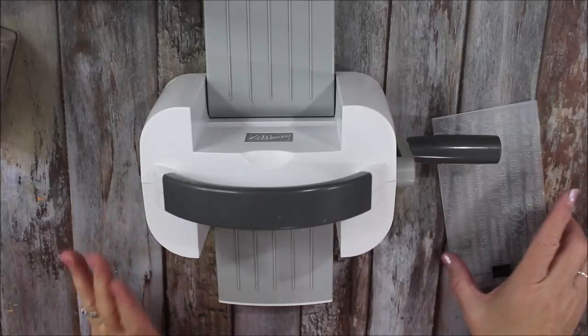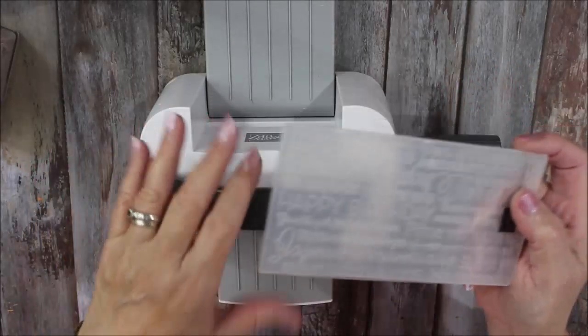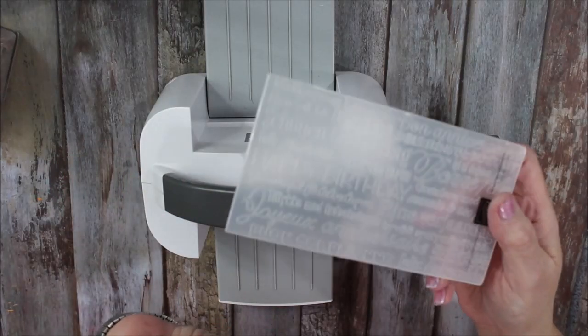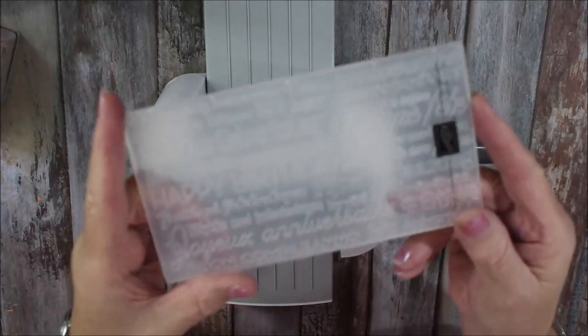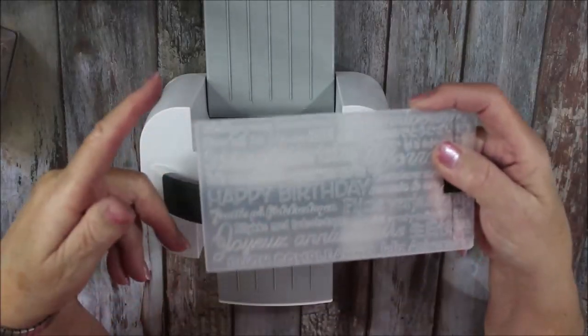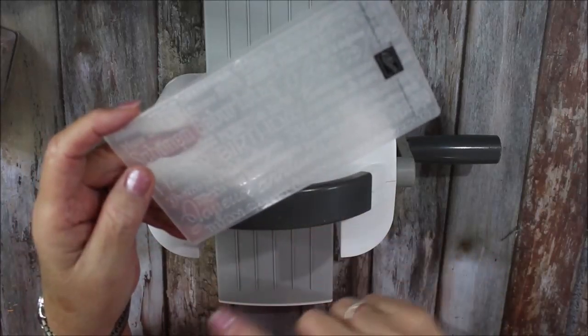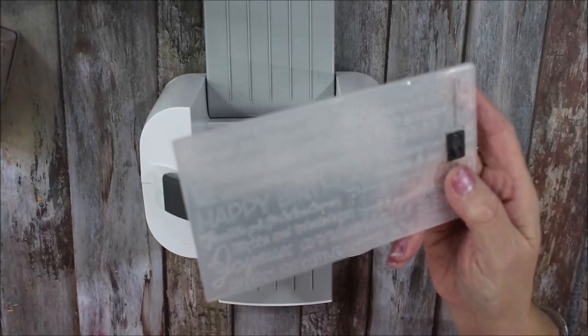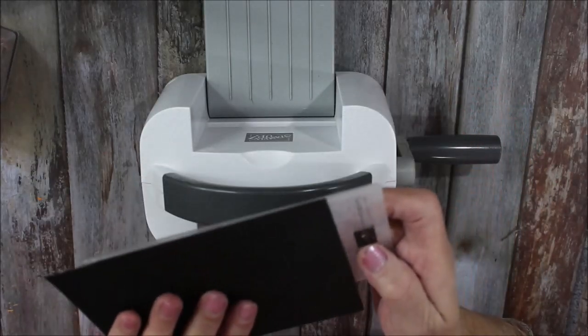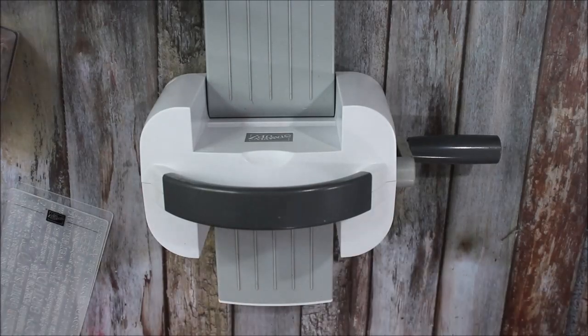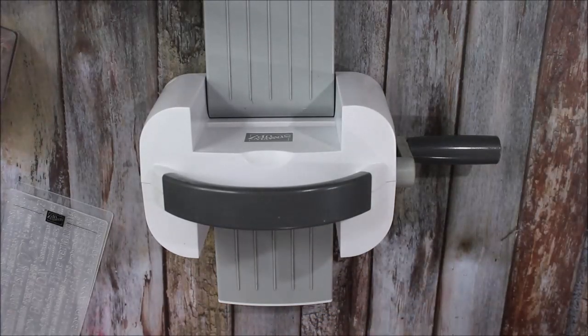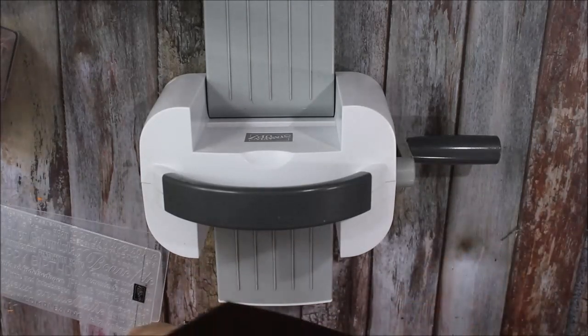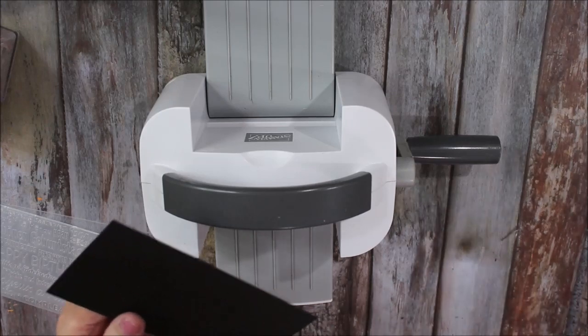So the next type of embossing is dry embossing and that's where we use our embossing folders. Now there's a lot of these available through Stampin' Up, there's 3D ones which are a thicker folder and you will need a specialty plate for those. But this is one called Let's Celebrate and it's a lovely little one for the mini. You can use it in your big one as well, your larger one, but I'm just going to show you today the basics of dry embossing. So I'm going to take a bit of black. Now I just need to trim that down just a little bit because I think it's only nine centimeters wide for the mini and I had that cut for the larger one.